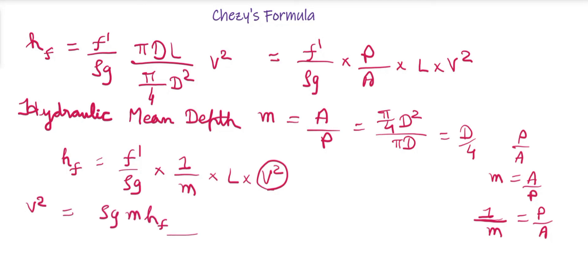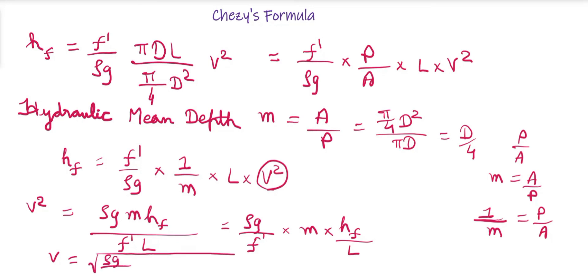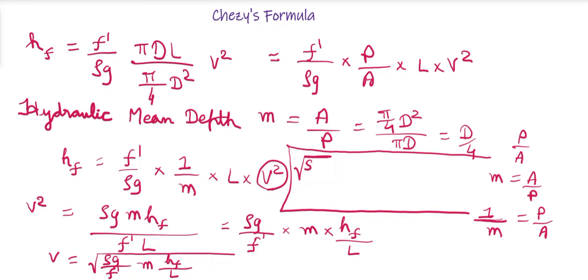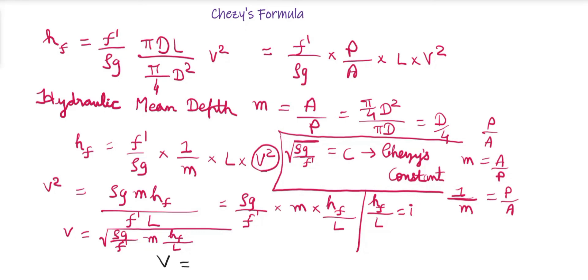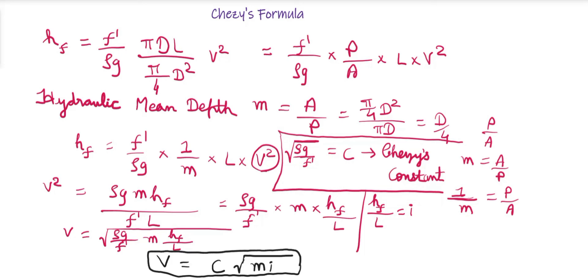Substituting: Hf = (F'/ρg) × (1/m) × L × V². Making V² the subject: V² = (ρg/F') × m × Hf/L. Taking the square root: V = √(ρg/F') × √(m × Hf/L). Here √(ρg/F') is called C, the Chezy's constant, and Hf/L is the hydraulic gradient I. Therefore V = C√(mI), which is known as Chezy's formula.